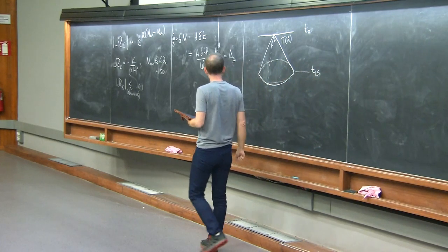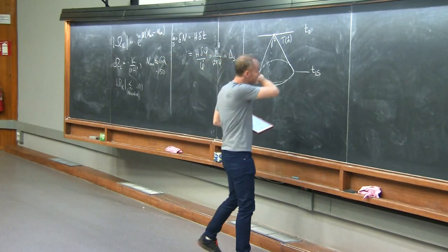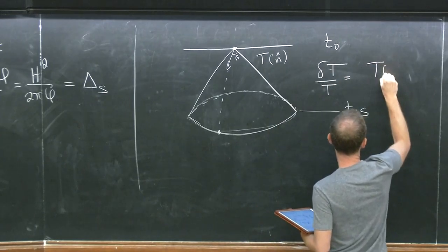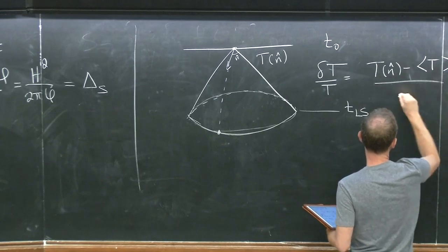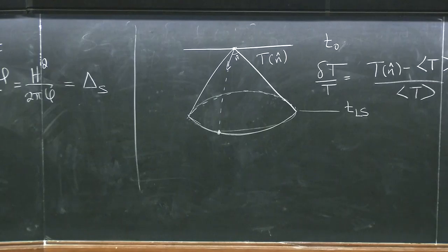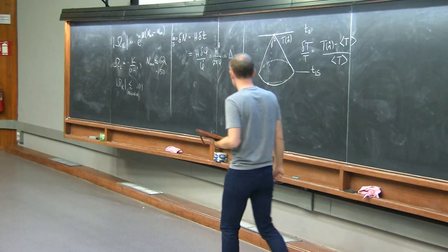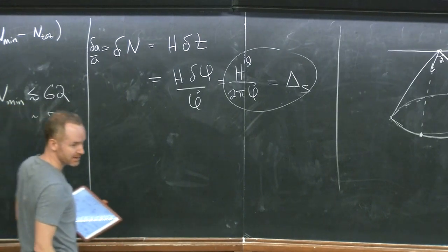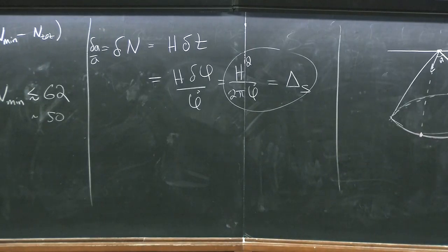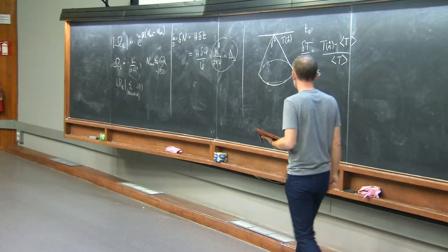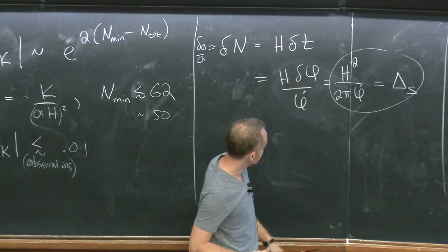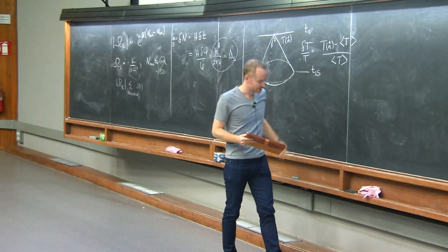Given T(n-hat), one thing we can measure is delta T over T — that's T(n-hat) minus the average temperature, divided by the average temperature. This is a quantity whose average is zero but which has a non-zero variance and standard deviation. It's that standard deviation that's directly related to the curvature perturbation formula. Delta N is another quantity with average zero — the fluctuation in the number of e-folds with respect to the background. Its variance is precisely what I mean when I write this equation, and it's closely related to the temperature fluctuation.